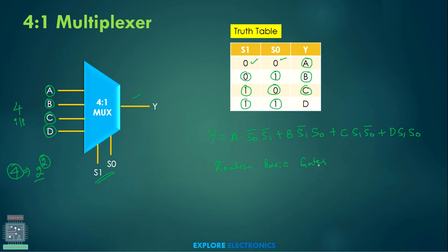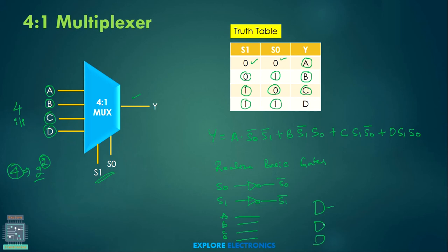The basic gate realization requires a NOT gate to generate S0̄ and S1̄. Take S0, put one NOT gate to get S0̄; take S1, put one NOT gate to get S1̄. Using the A, B, C, D lines we put AND gates, and the combination of four AND gates and one OR gate gives the final expression Y. You can try connecting it yourself by looking at this expression.